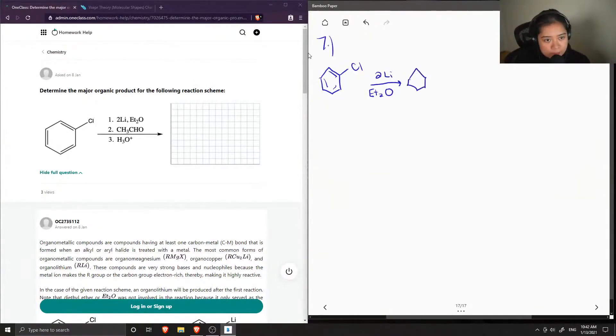So when this reacts with lithium, the lithium displaces the chlorine and also lithium chloride is formed in the process. So let me just write what happened. So organolithium compound is formed.